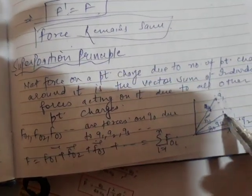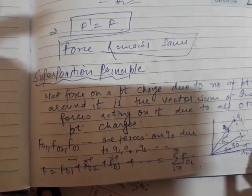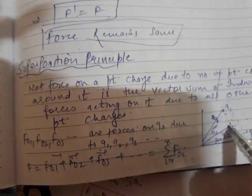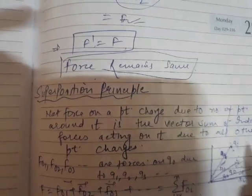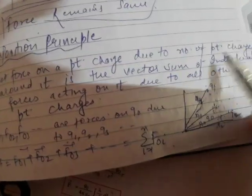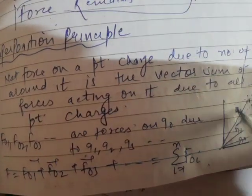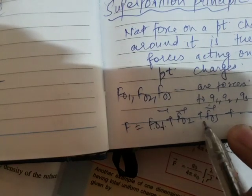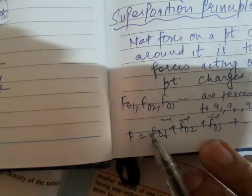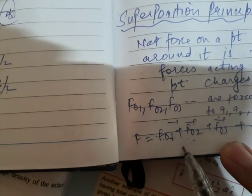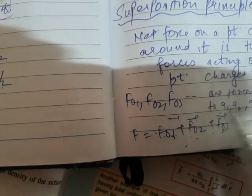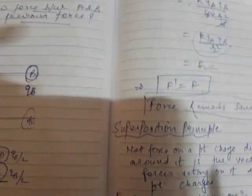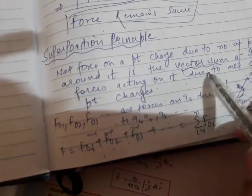You are going to simply add the forces on Q naught due to Q1, plus force on Q naught due to Q2, plus force on Q naught due to Q3, and so on. The net result of all these forces — you will simply add them as a vector sum. The vector sum of all these forces is the net force.